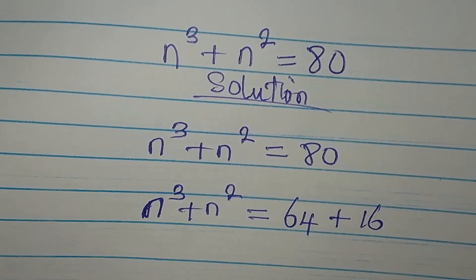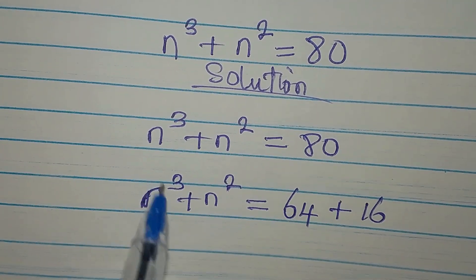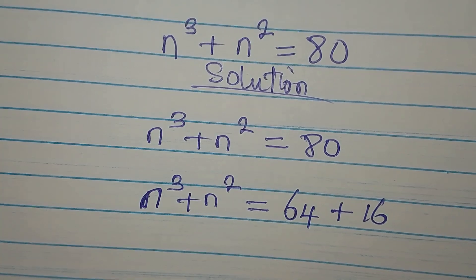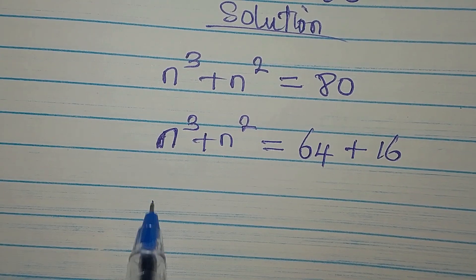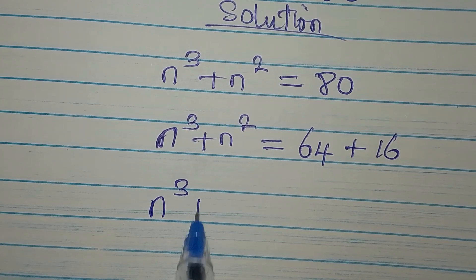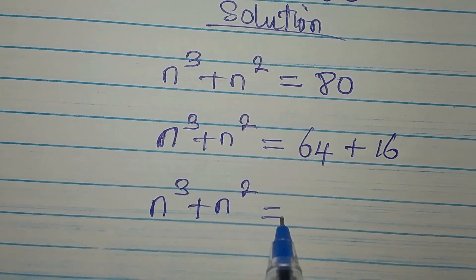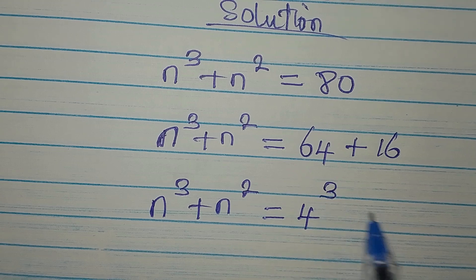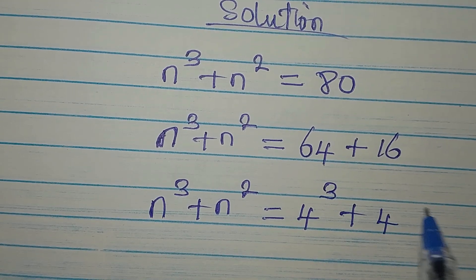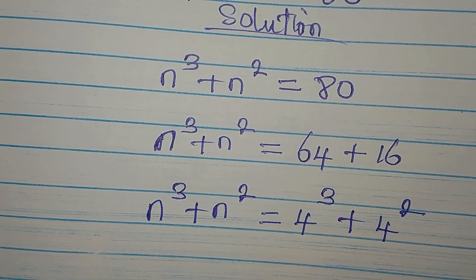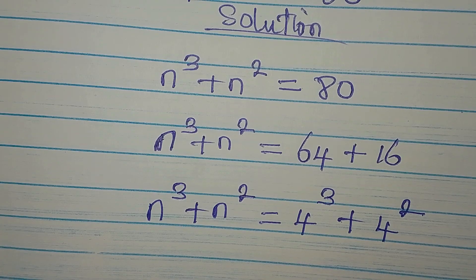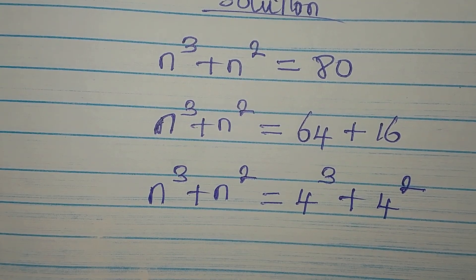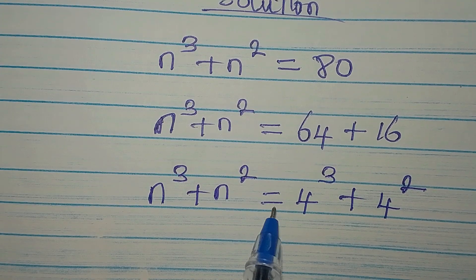64 can appear as 4 cubed and 16 can appear as 4 squared. So we write n³ + n² = 4³ + 4². Looking at the left-hand side and the right-hand side, we can see that n is already 4, but if we conclude at this point we won't get the other solutions.